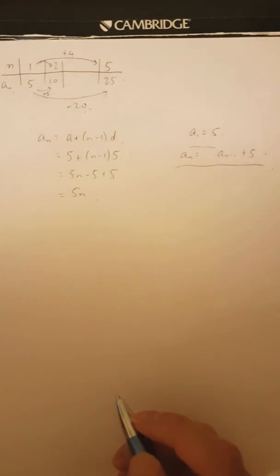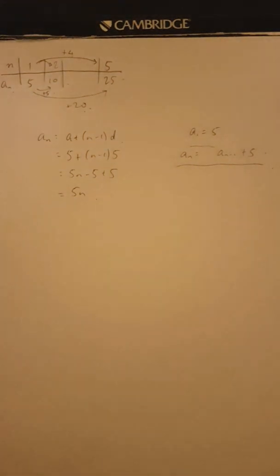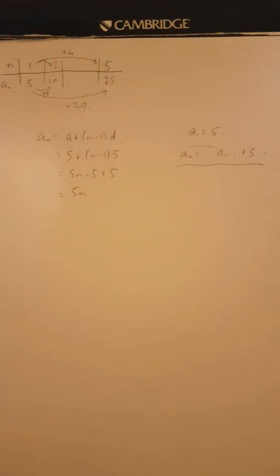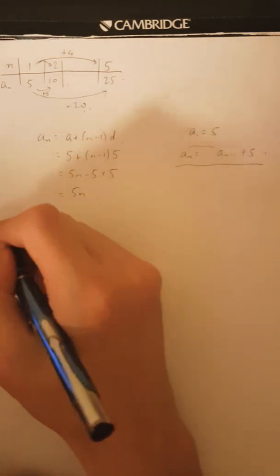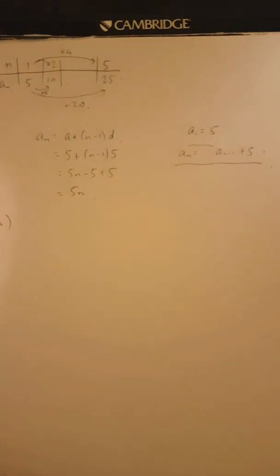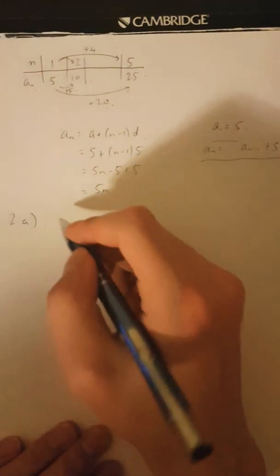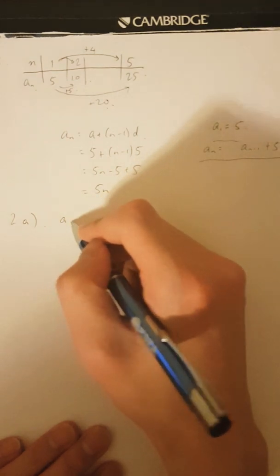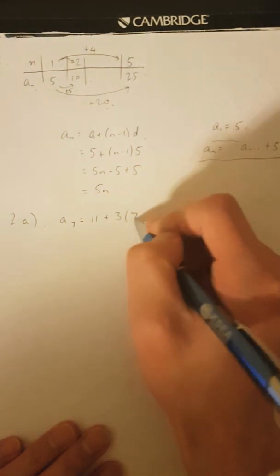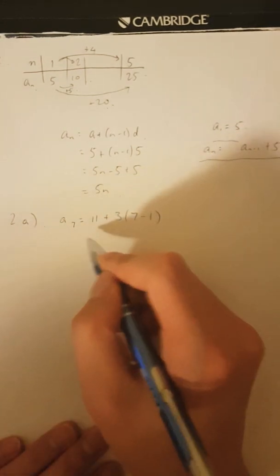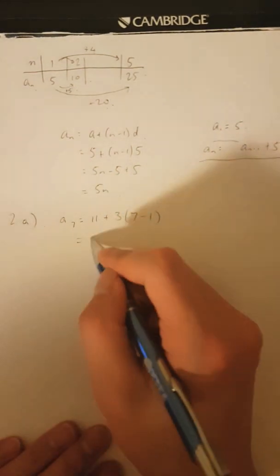That was question one. Let's move on to question two: look at the explicit and recursive forms and find the seventh term of the sequence. For A and B, these should be gift points — to find the seventh term, we're interested in A_7, so all we need to do is substitute N equals seven. For two A, A_N is 11 plus 3 times N minus one, so A_7 is 11 plus 3 times 6, which is 29.